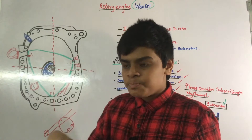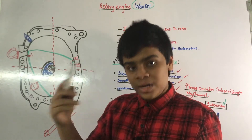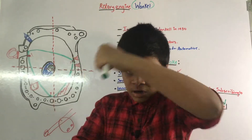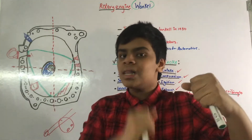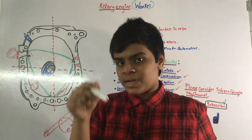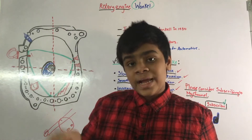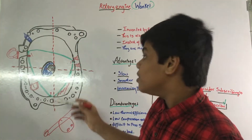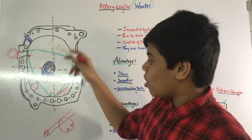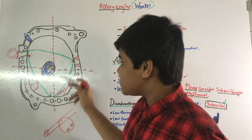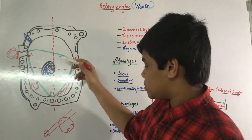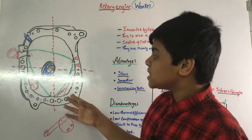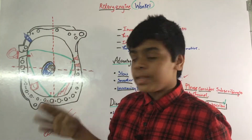Because a triangle spinning in a fixed point isn't stable like a circle — it shifts and destabilizes — the eccentric shaft lobe holds it in place. The drive shaft connects to the e-shaft, and the e-shaft is directly connected to the rotors.